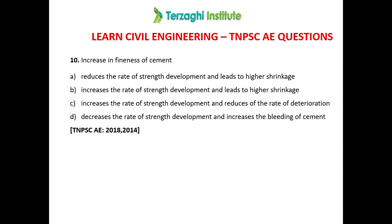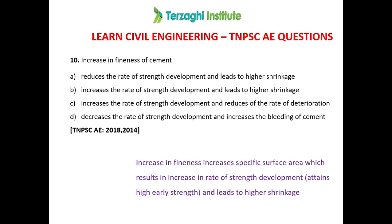Question 10: Increasing the fineness of cement — which statement is correct? Option A: reduces rate of strength development and leads to high strength. Option B: increases the rate of strength development and leads to high shrinkage. Option C: increases rate of strength development and reduces rate of deterioration. Option D: decreases rate of strength development and increases bleeding. The answer is option B: increasing fineness increases the rate of strength development and leads to high shrinkage.